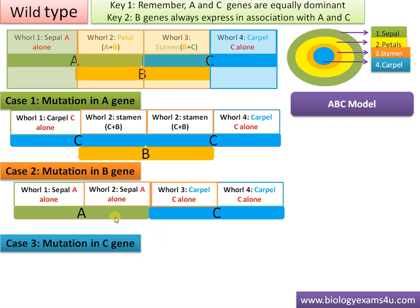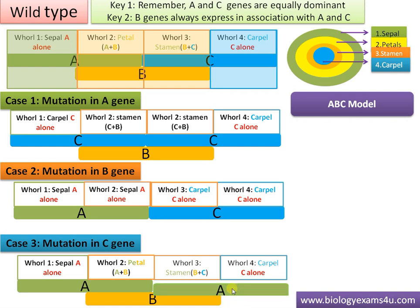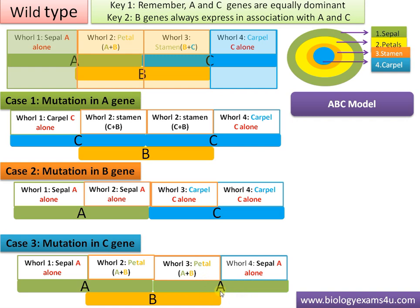Case three: mutation in C gene. The C gene is non-functional, and as established, A becomes active in its place since A and C are equally dominant. Therefore in whorl three, instead of C there is now A — A plus B gives rise to petal, and A alone gives rise to sepal. So the result is sepal, petal, petal, sepal.